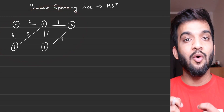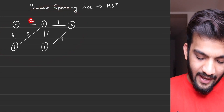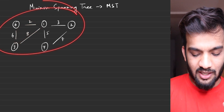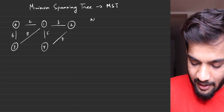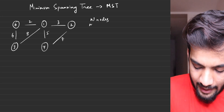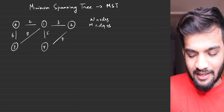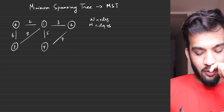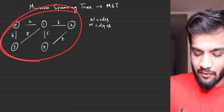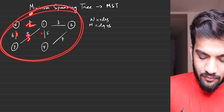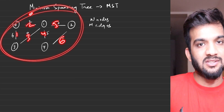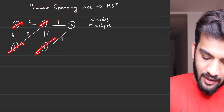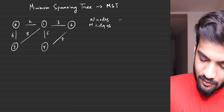You will be given an undirected weighted graph where edges can have different or equal weights. This graph will contain n nodes and m edges — n and m can be any number with no fixed relation between them. For example, this graph has five nodes and six edges.